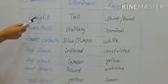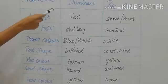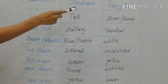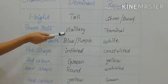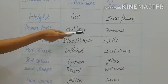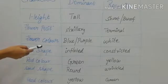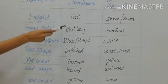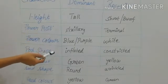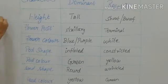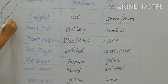The first contrasting character is height. Tall is dominant and short or dwarf is recessive. The second is flower position — axillary is dominant and terminal, which is present at the end, is recessive. The third is flower color — purple or blue is the dominant color and white is the recessive color. Then pod shape — if the pod is flat that shape is dominant, and if it is constricted that shape is recessive.